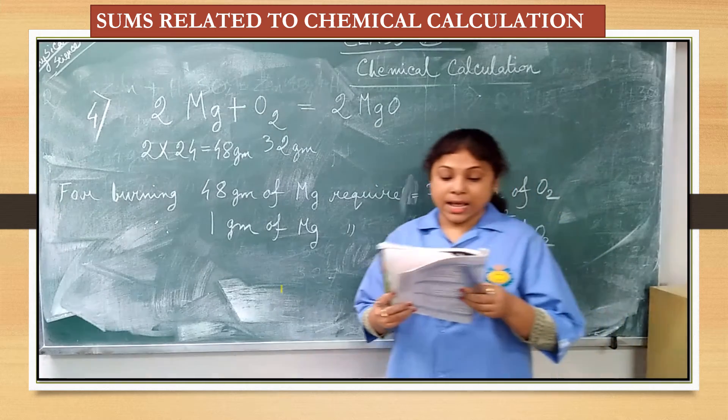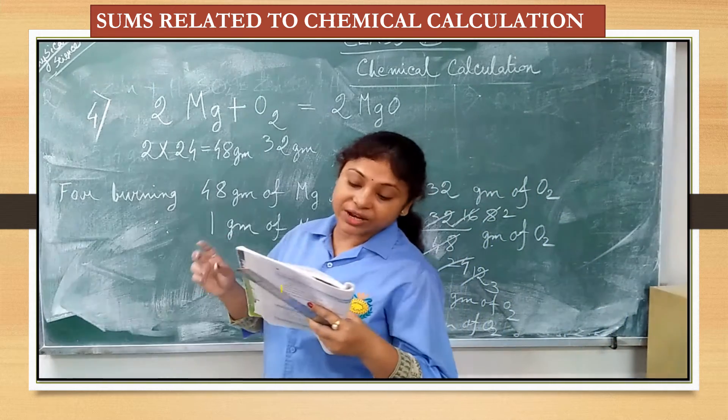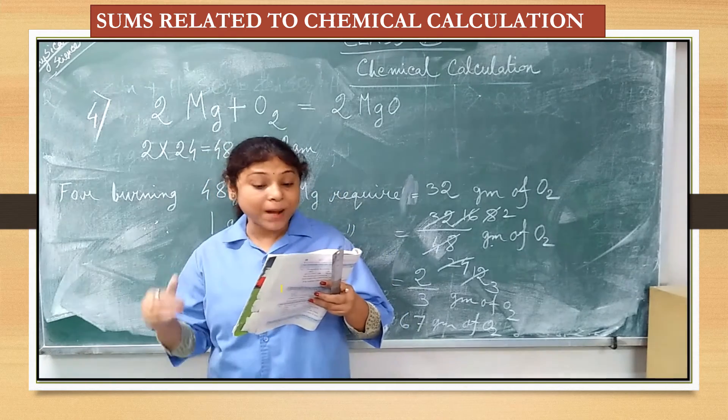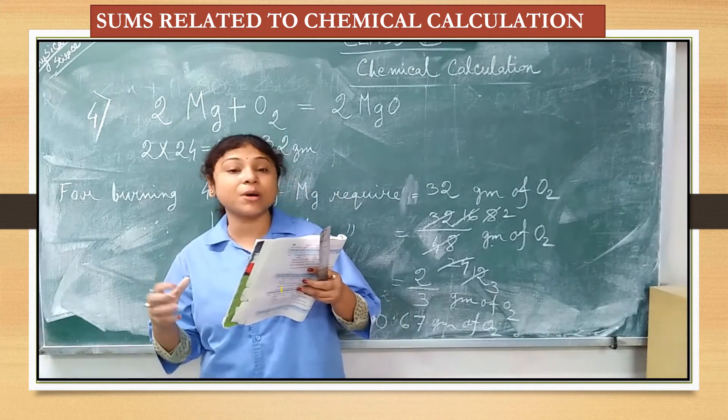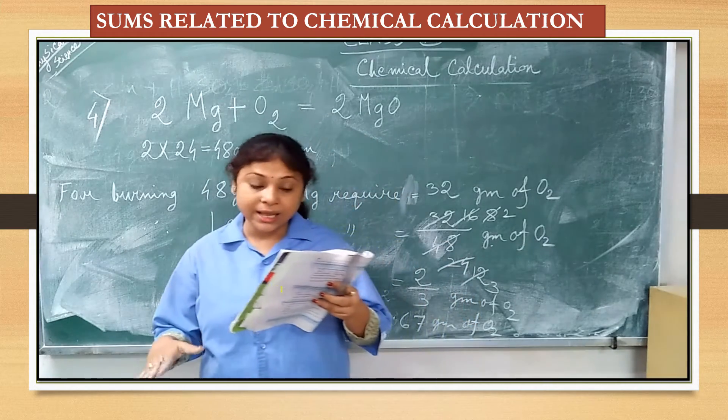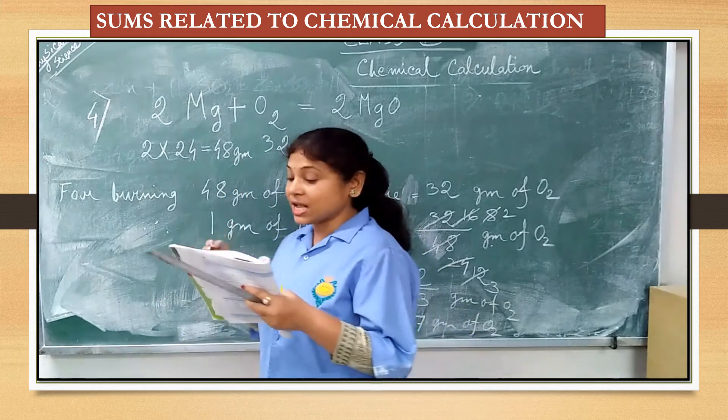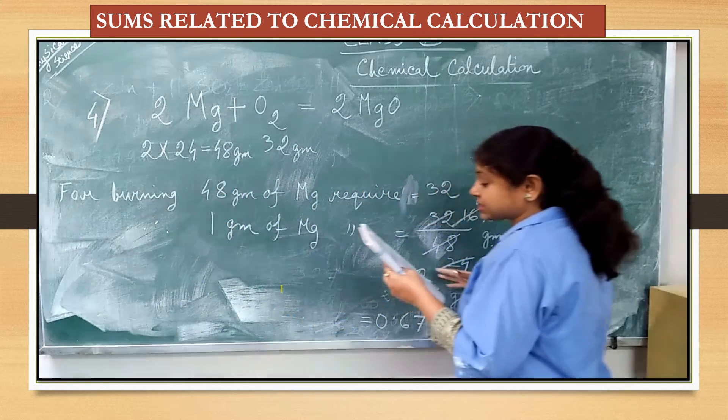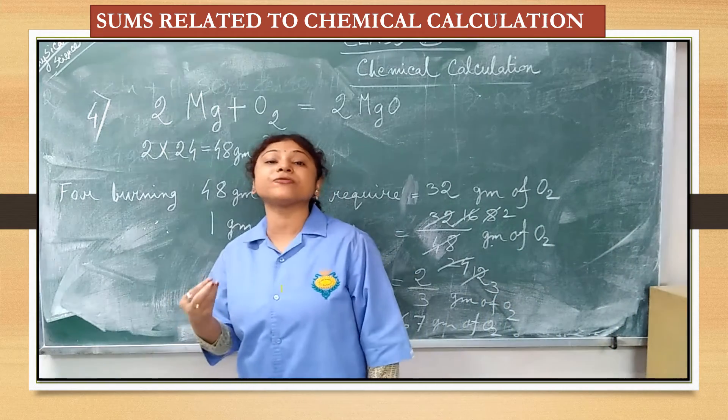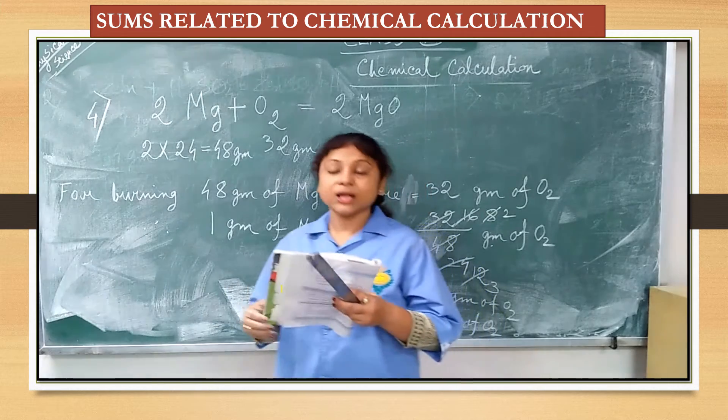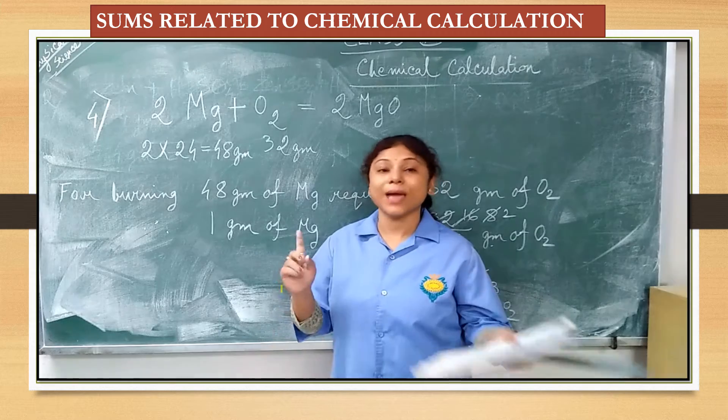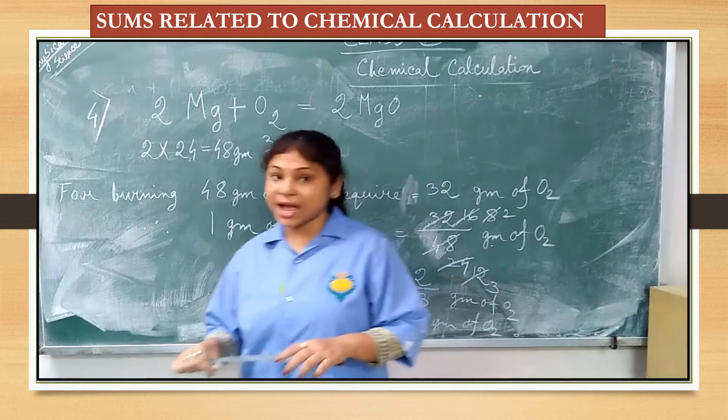Now, as 0.67 gram oxygen will be required to burn 1 gram magnesium. But, there are 0.5 gram of oxygen. So, magnesium will not burn completely. Because, you understand 0.67 gram required. But, there is only 0.5 gram of oxygen. So, magnesium will not burn completely. So, magnesium will remain in excess. That's all.